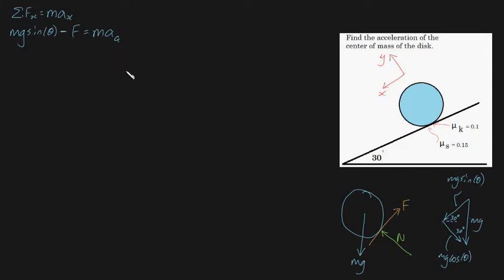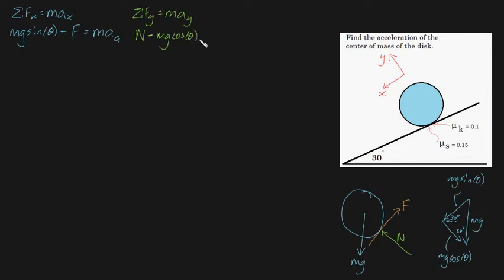We can't really progress with this so far, so let's see what other formulas we can use. We know that the sum of forces in the y direction equals mass times acceleration in the y direction. What are the sum of forces in the y direction? We've got mg·cosθ and our normal force. N minus mg·cosθ equals m·ay, or just zero, because your acceleration in the y direction is zero.